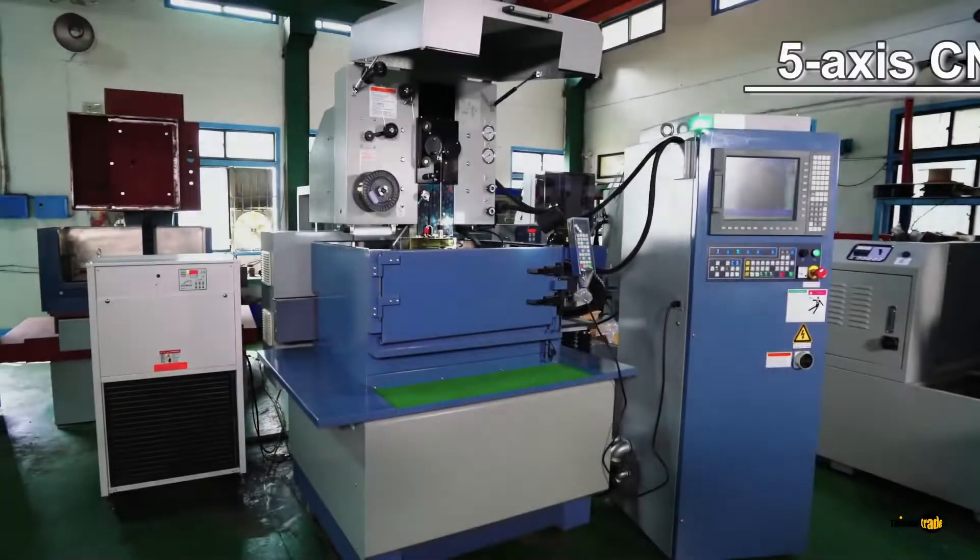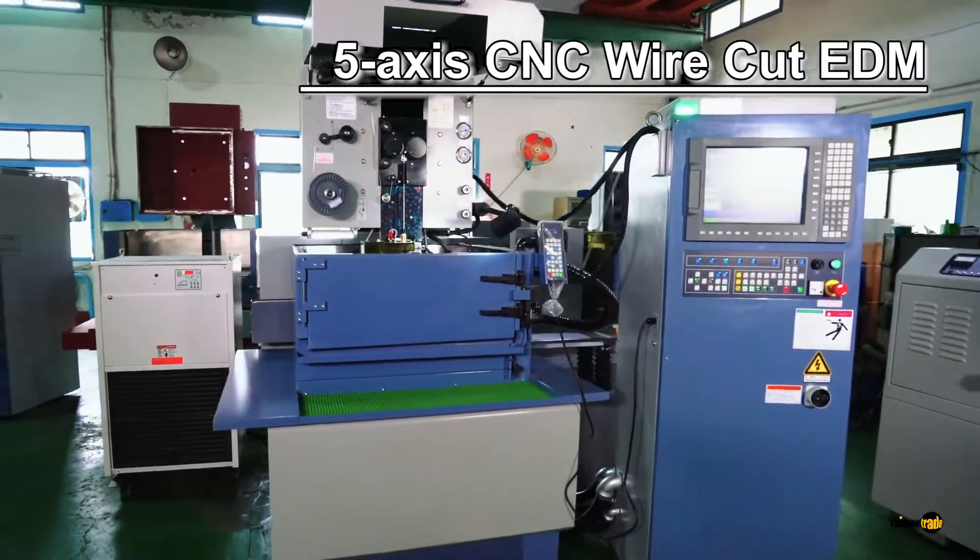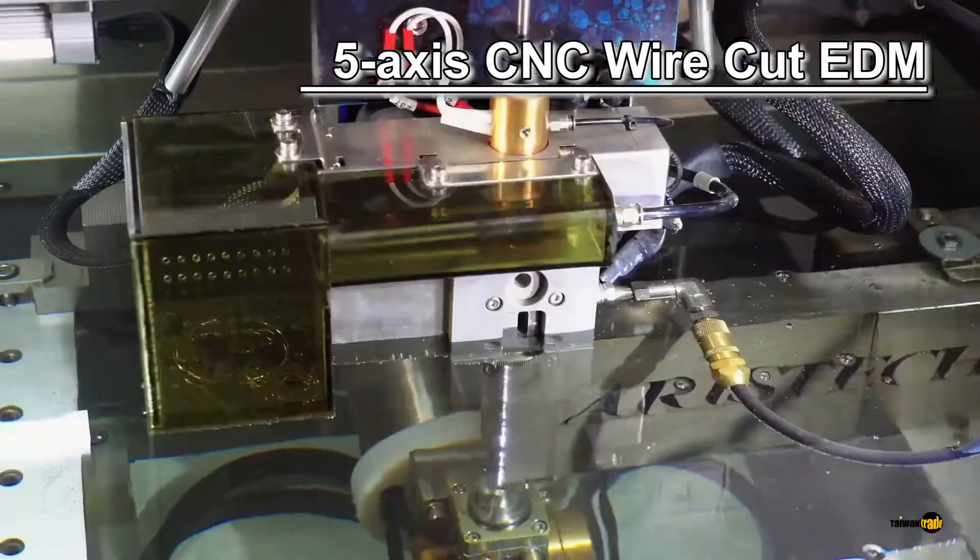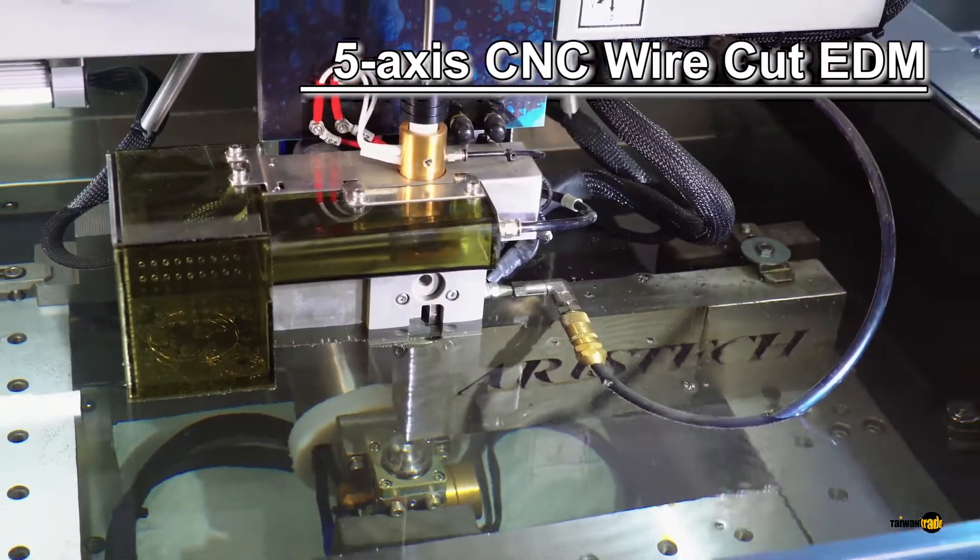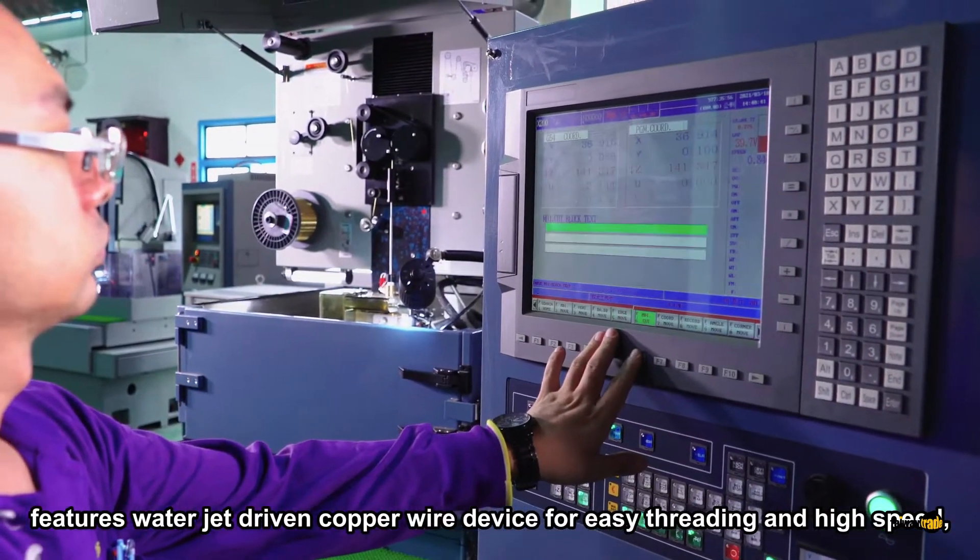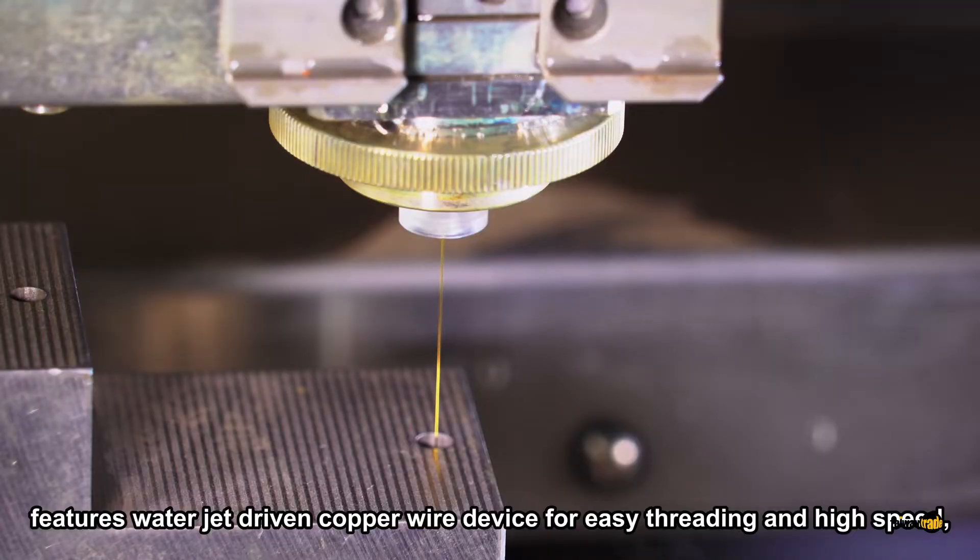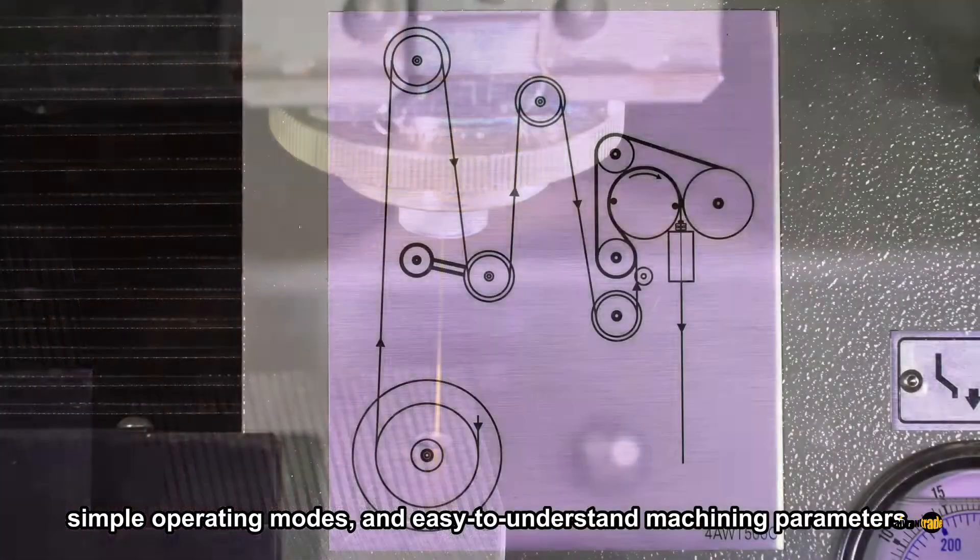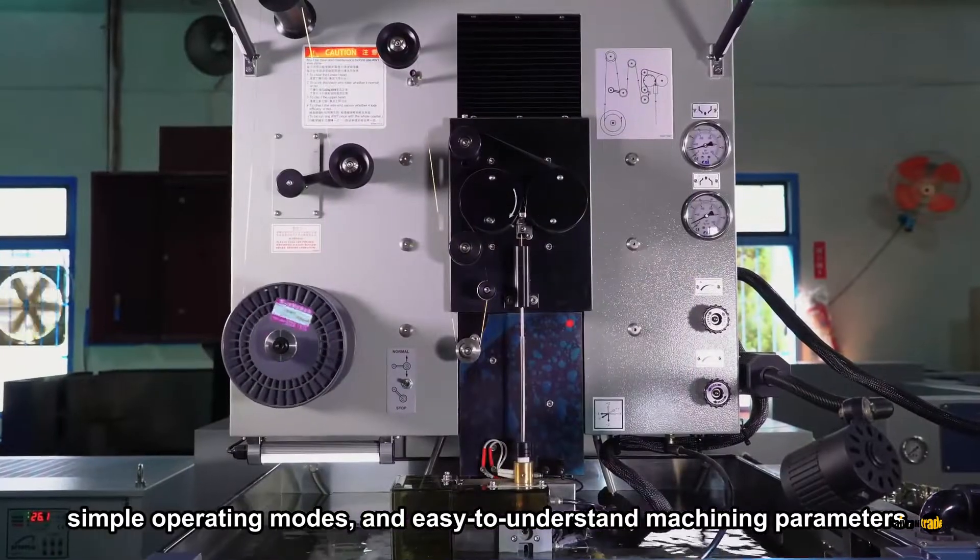5-axis CNC wire cut EDM features water jet driven copper wire device for easy threading and high-speed simple operating modes, and easy to understand machining parameters.